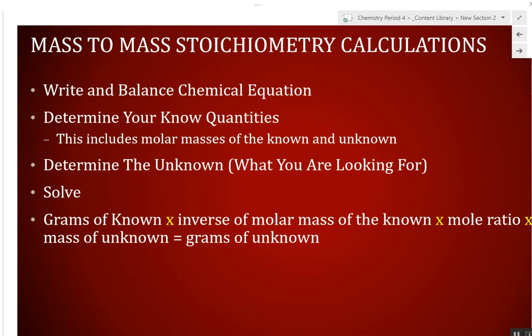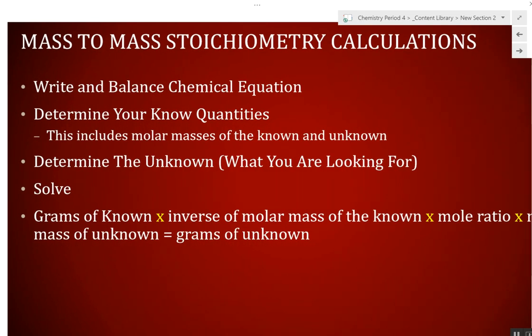Here's the steps. What do we always have to do first? Write and balance the chemical equation. Remember that for a quiz. So, you're going to write and balance the chemical equation. Number one. Determine what you know. This includes finding molar masses of both the known and the unknown. Determine what you're looking for. And solve it.